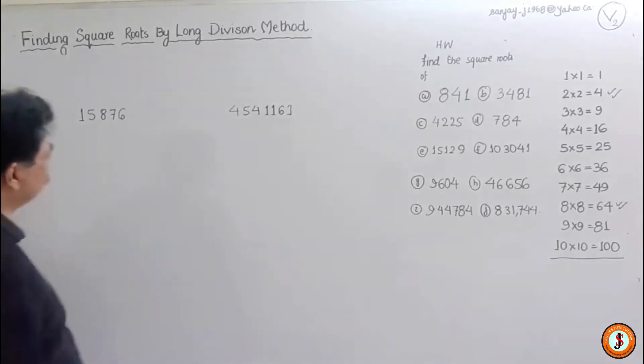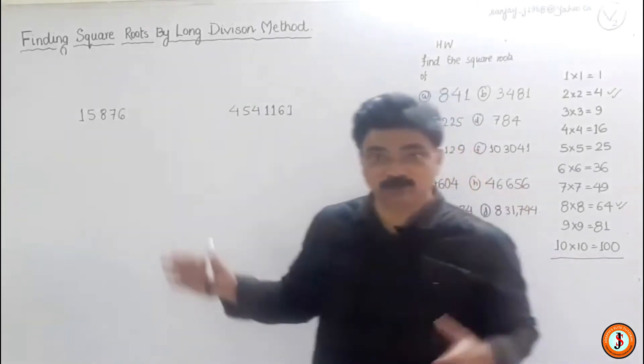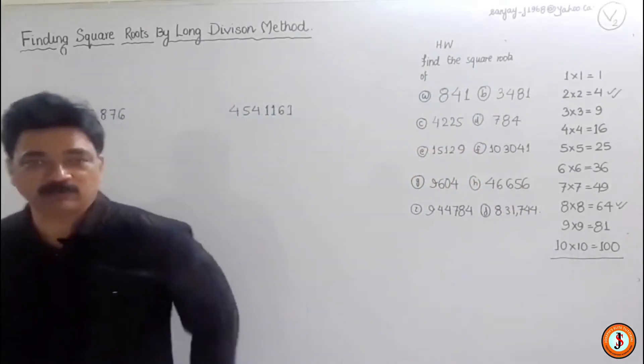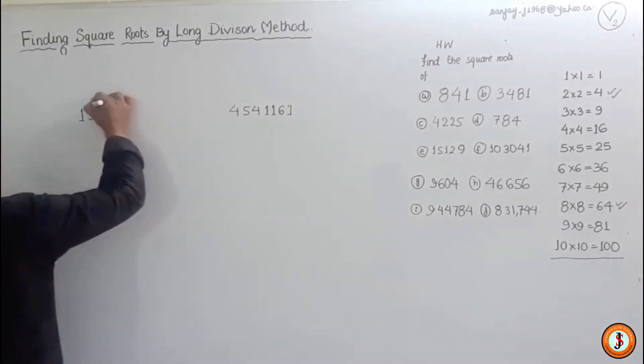So children, here we continue finding out the square root by long division method. Hopefully you are following. Now pairing is very important. Here we pair from this end as we know this algorithm is like this and then we go this way.